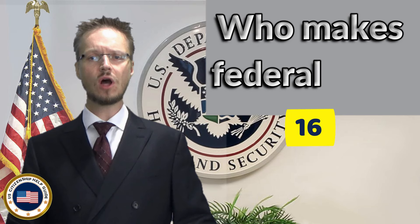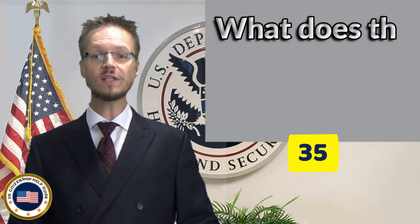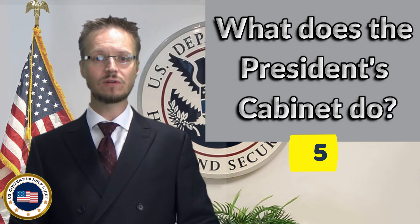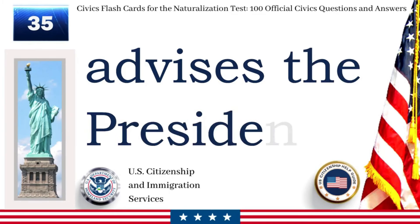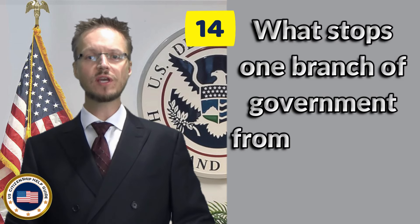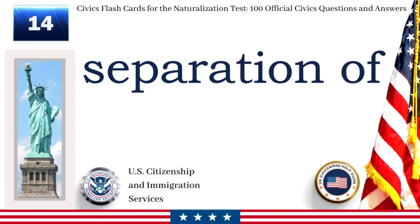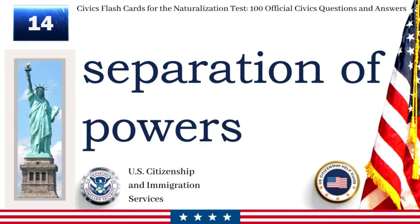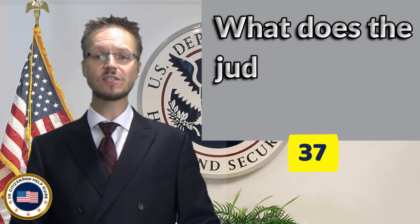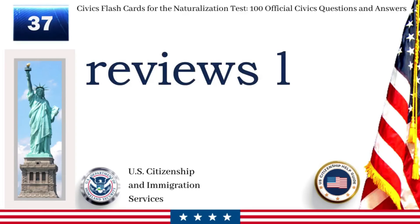Who makes federal laws? Congress. What does the President's Cabinet do? Advises the President. What stops one branch of government from becoming too powerful? Separation of powers. What does the Judicial Branch do? Reviews laws.